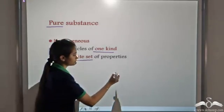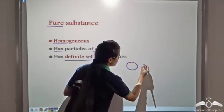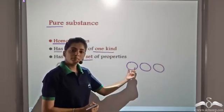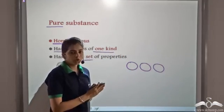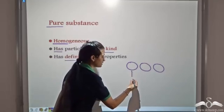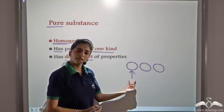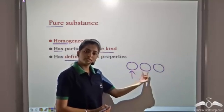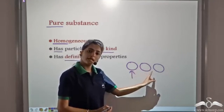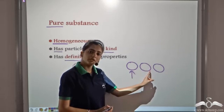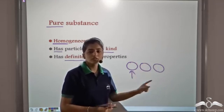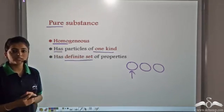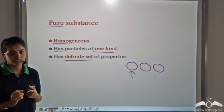When similar particles come together, they form the pure substance. So if this particle has some physical and chemical properties, since this particle is the same as this one, so this also has the same physical and chemical properties. Throughout, the physical and chemical properties are the same. So pure substances have a definite set of properties.